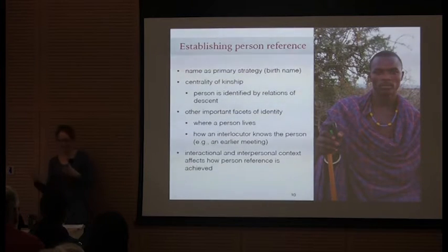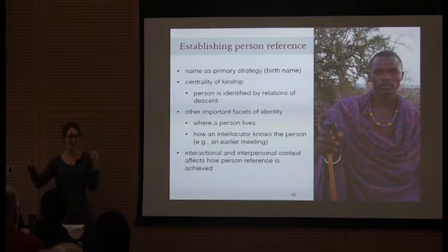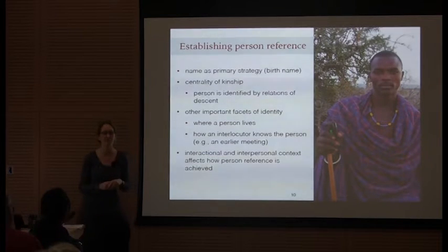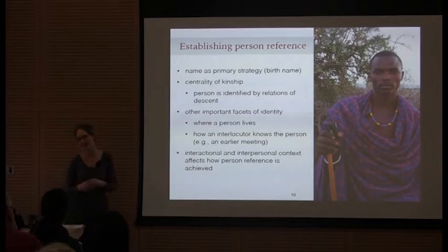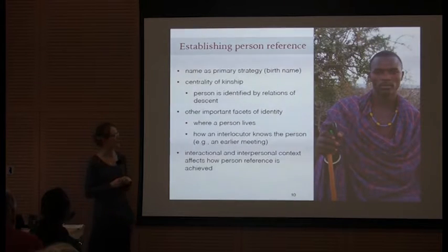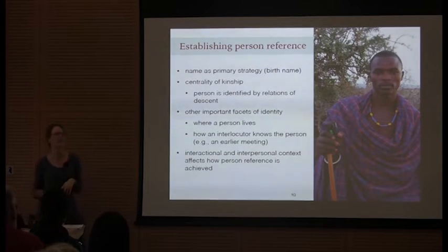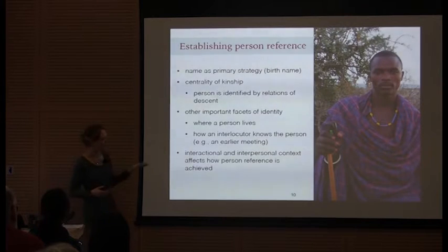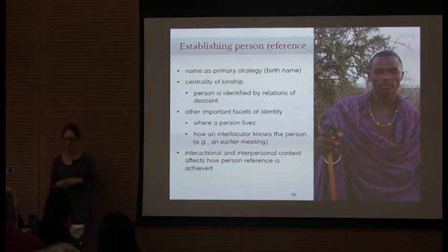The reason this short interaction has so many person referring expressions is because she can't see him. Humans are amazingly good at facial recognition — in face-to-face interaction we don't have to figure out who someone is because we know from looking at them, and in this case she couldn't, so she had to rely on language to help her figure out who Ginegid was. This is a nice example with lots of person referring expressions, but it's also specific to that context — if a young woman or an elder had come to the door, the ways of identifying them would have been different. The interactional and interpersonal context affects how person reference is achieved.